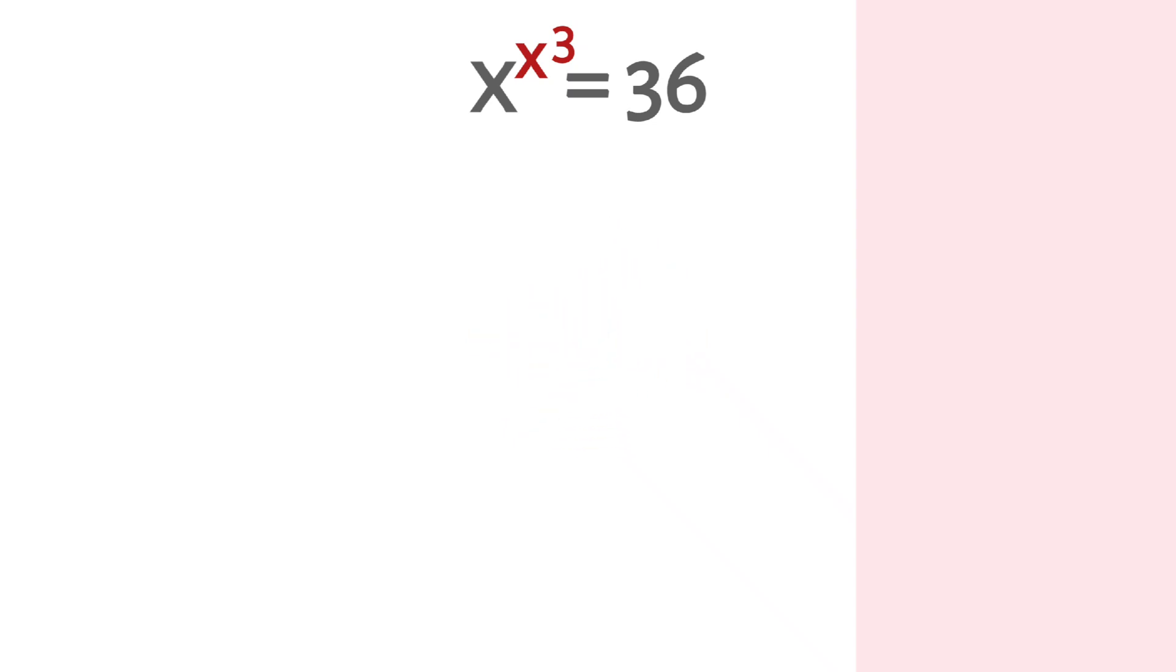So in these types of problems, we need to adjust the exponents by multiplying the exponents with 3 on both sides. We get x power x to the power 3 into 3 equals 36 to the power 3.